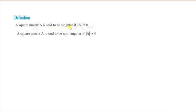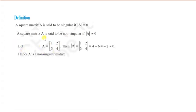Now, singular matrices. A square matrix A is said to be singular if |A| = 0. If |A| ≠ 0, then the matrix is called a non-singular matrix. For example, if A = [[1, 2], [3, 4]], then |A| = 4 − 6 = −2, which is not equal to zero, so this matrix is non-singular. If the determinant had been zero, the matrix would be called singular.